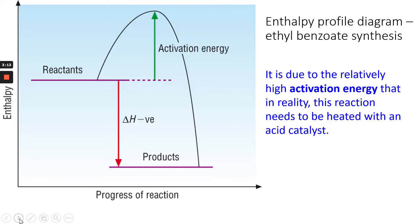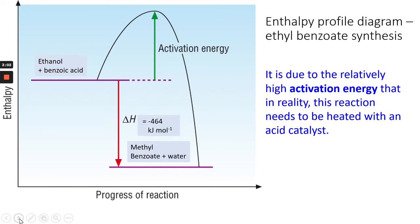However, there's quite a high activation energy to overcome, so we need to lower that using a catalyst, and also provide some heat to help overcome it. But as we said, we've got minus 464 kilojoules per mole, hence why the delta H arrow is pointing down.